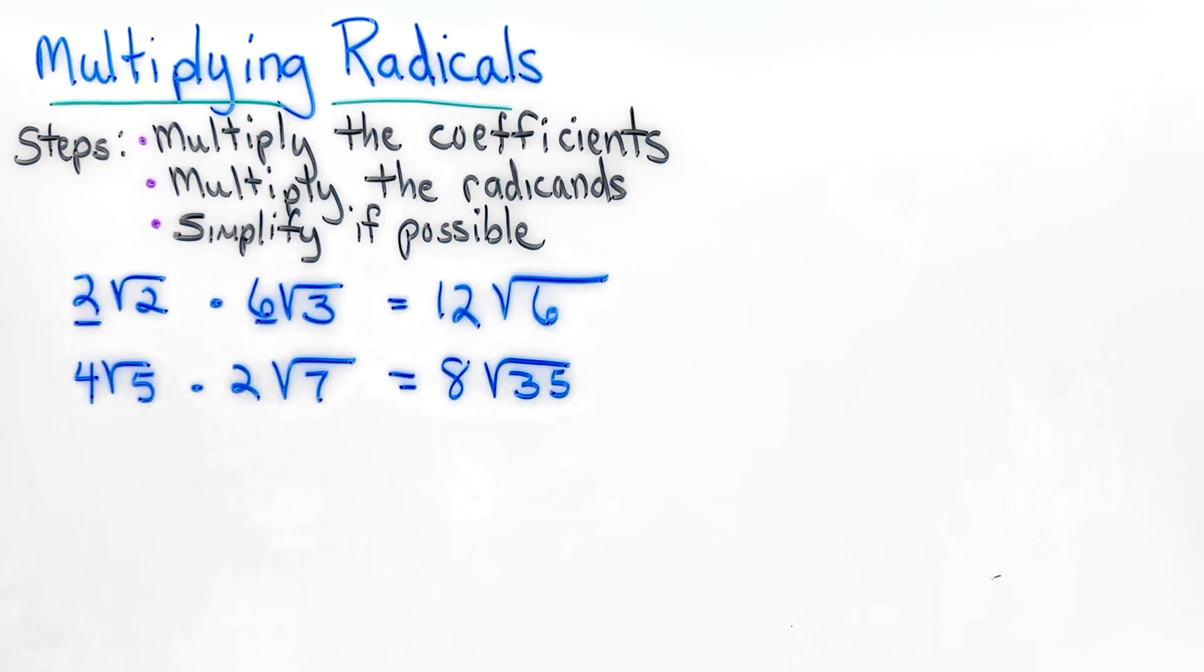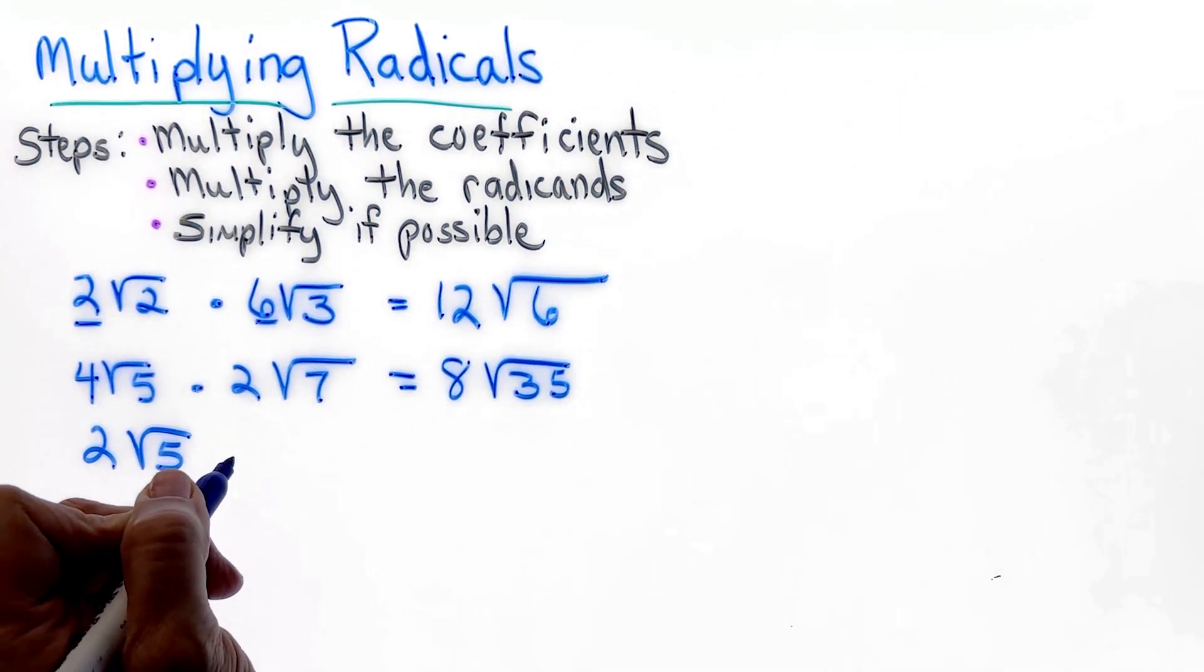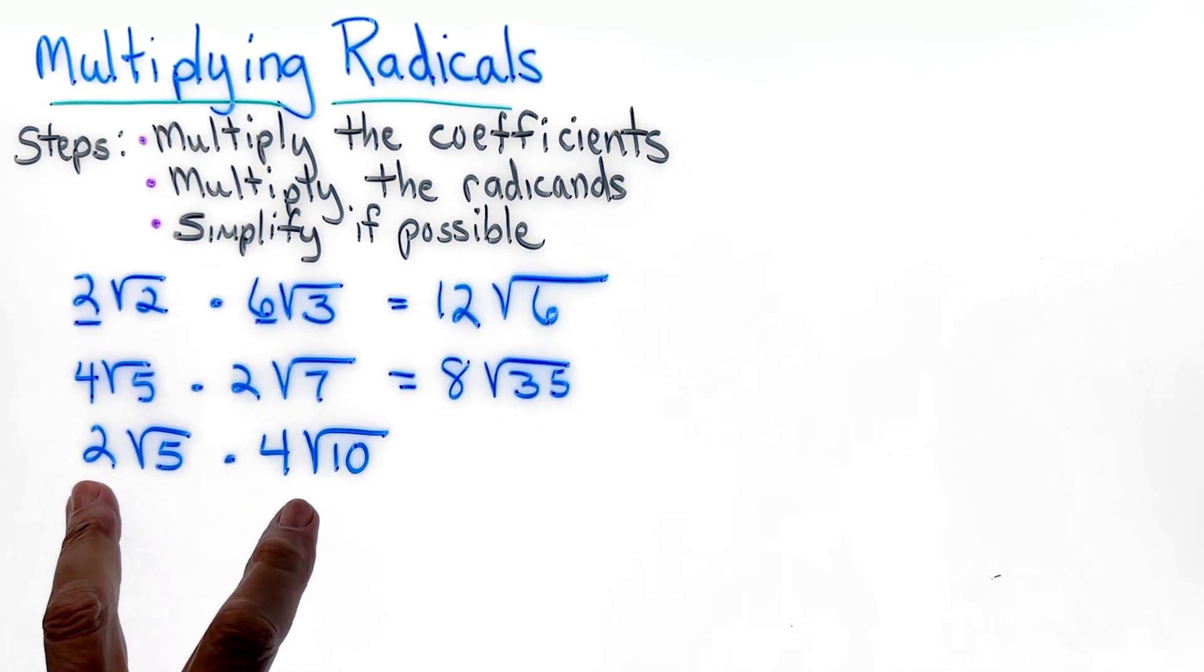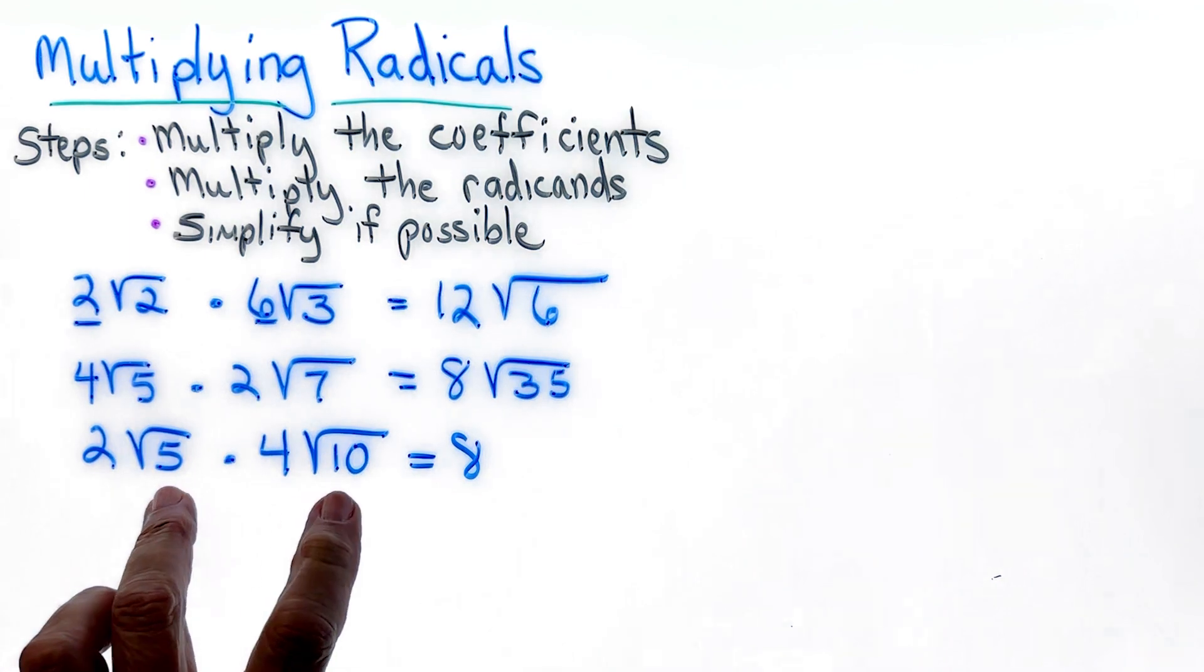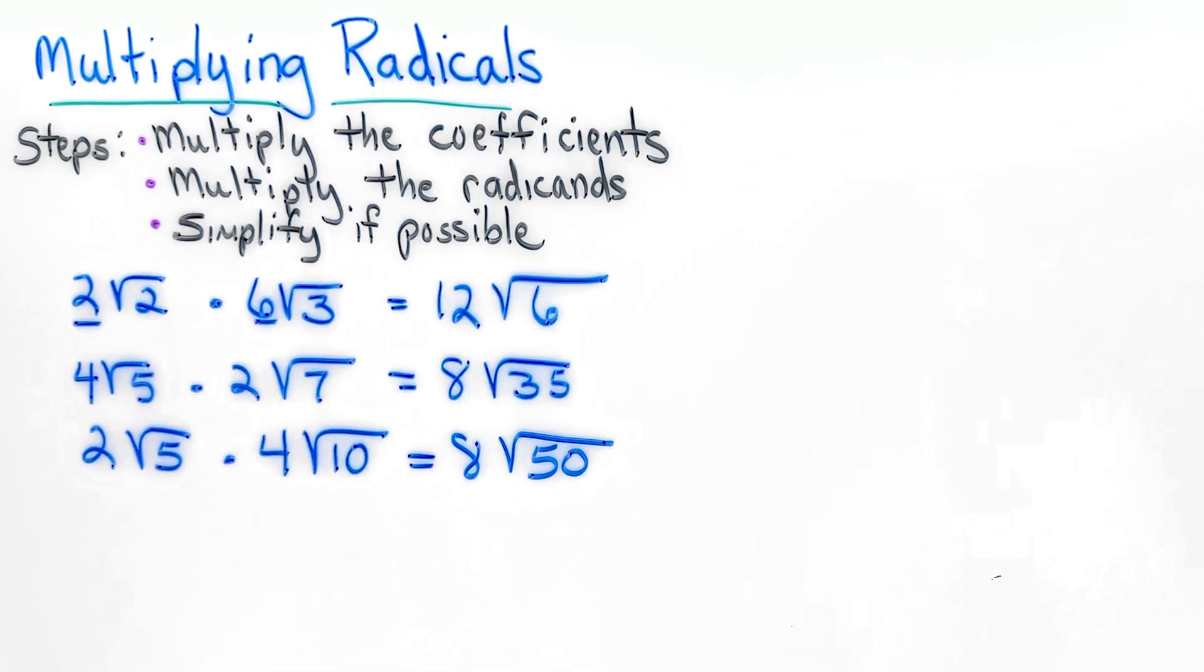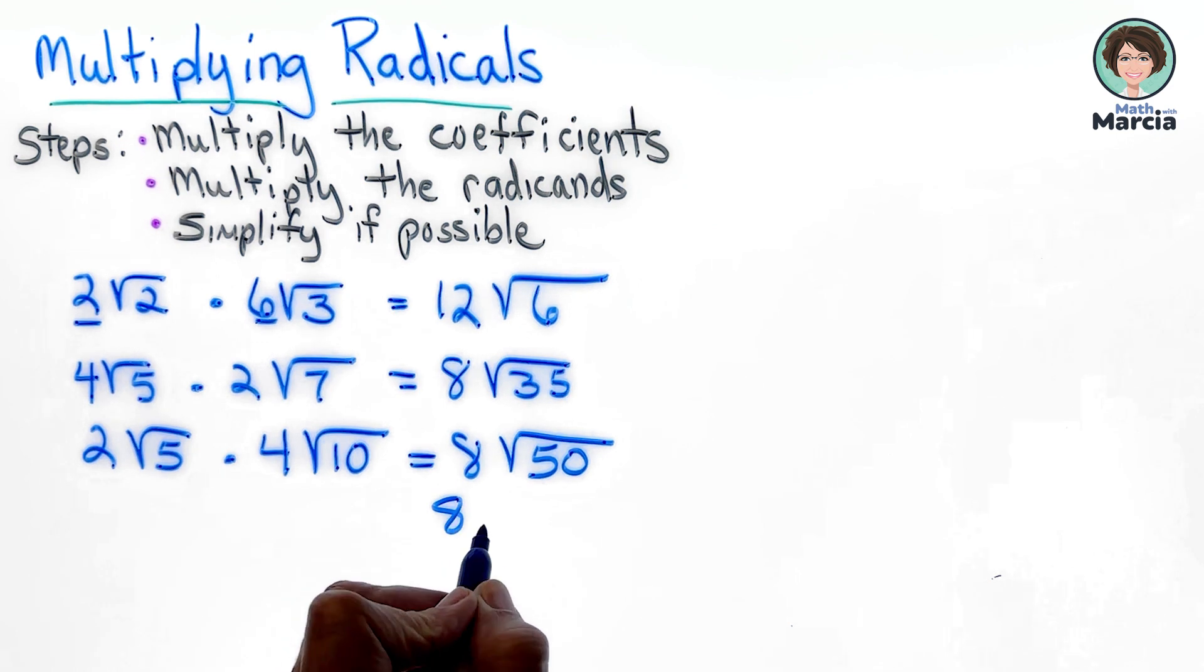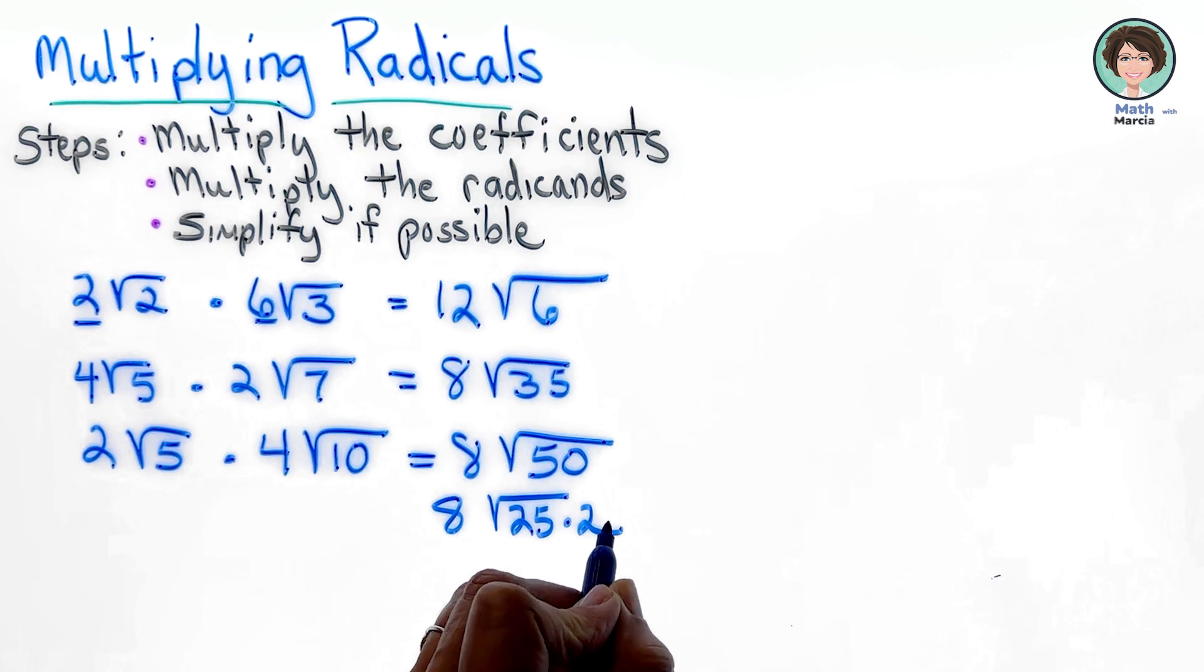The third example I'm going to give you, you may have to go ahead and simplify in the end. So let's check this out. 2 times 4 is 8. 5 times 10 is 50. Well, I know the square root of 50 is not in simplest terms. So I am going to have to go ahead and I'm going to break that down into 25 times 2.